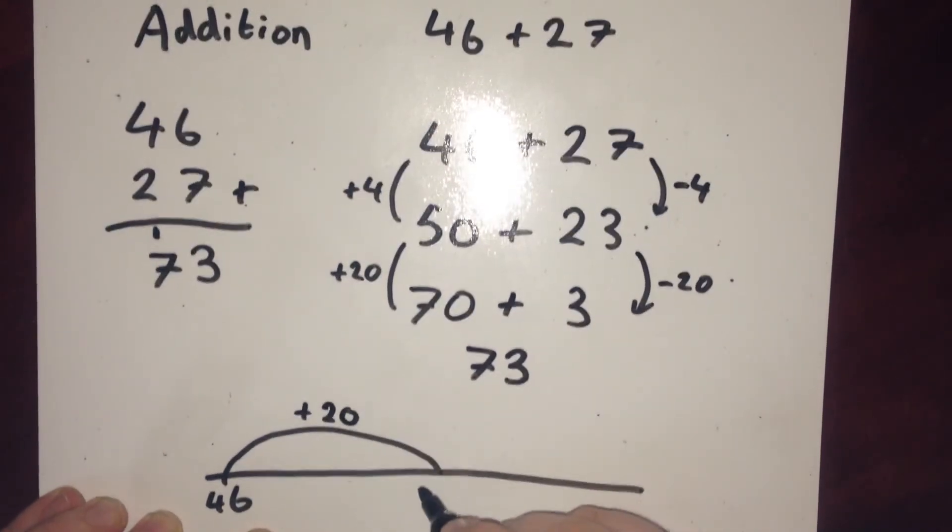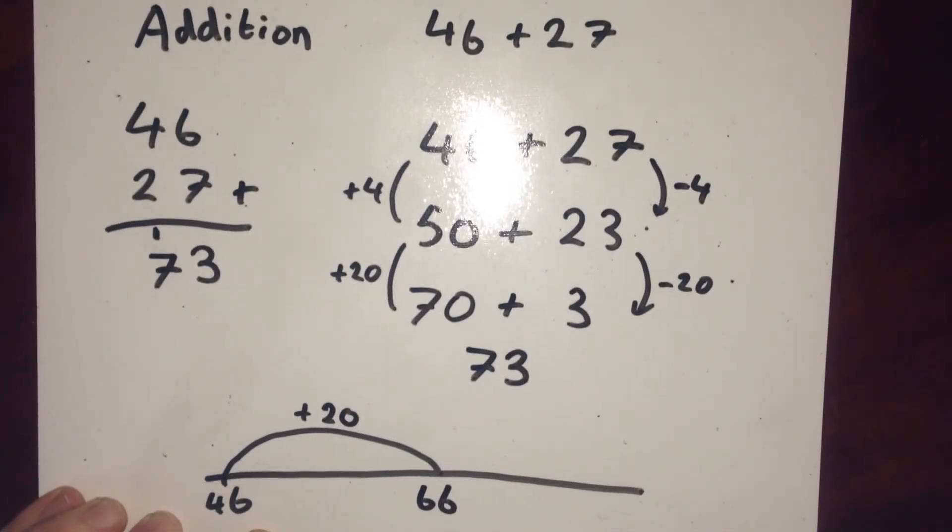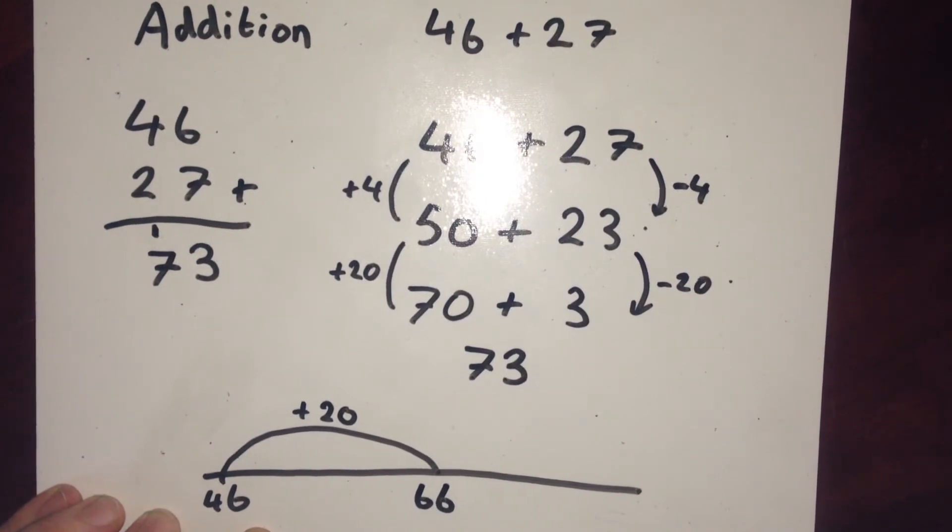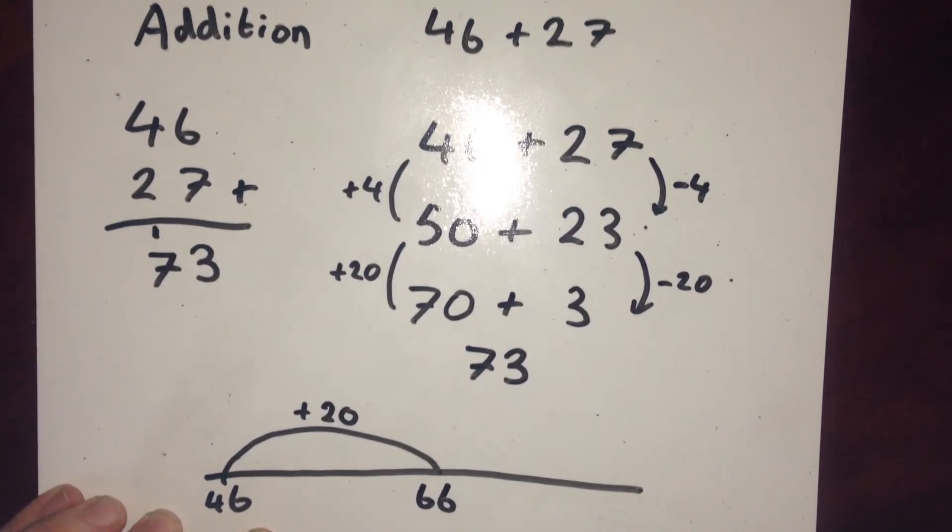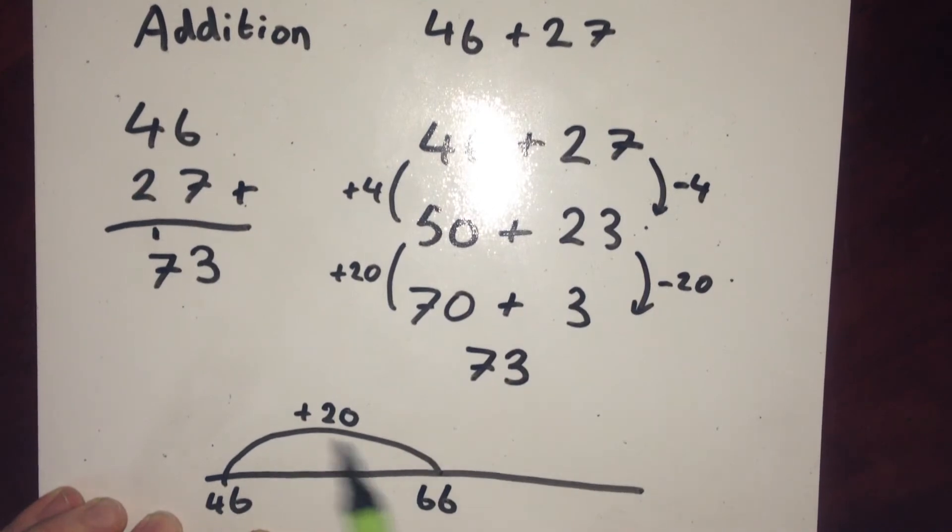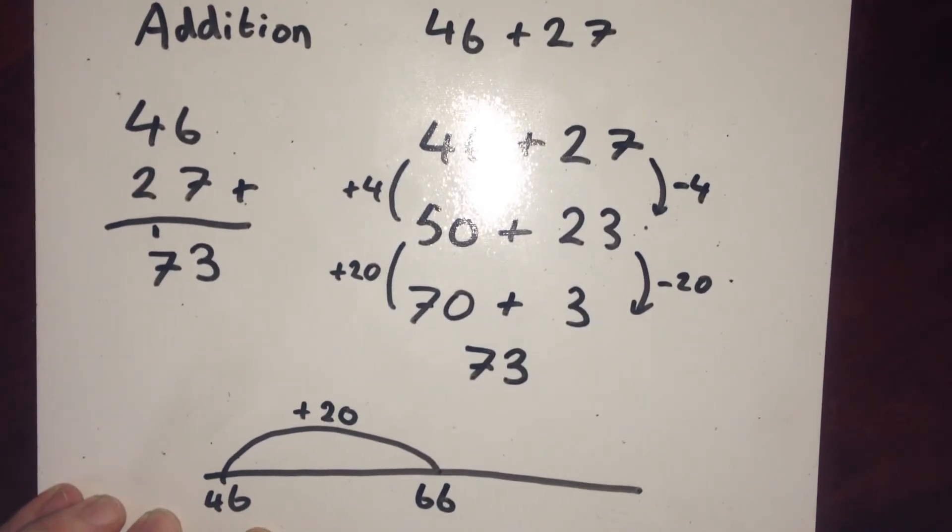To take us to 66. I've taken a jump of 20. It doesn't matter what jumps you take as long as in total all of your jumps add up to this 27. So I've done 20. I need to make another jump of 7.